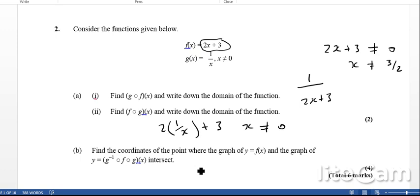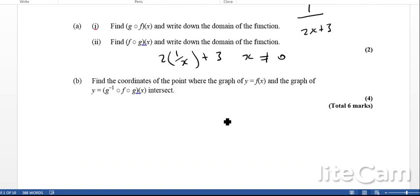For part b, find the coordinates of the point where the graph y equals f of x and the y, the inverse of g of x, intersect. Okay, so the way to do this, it's a little bit tricky.